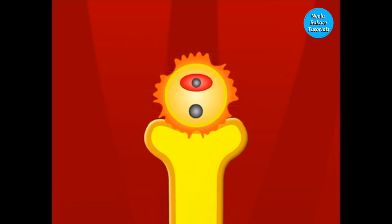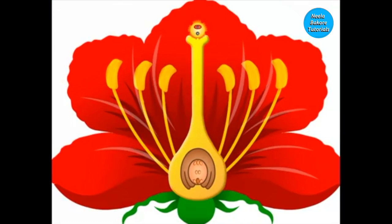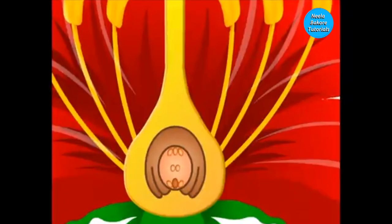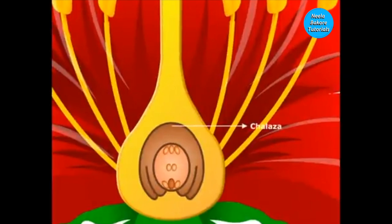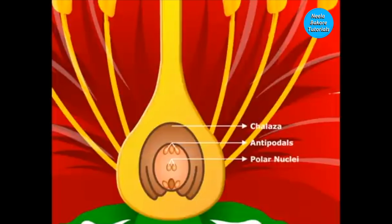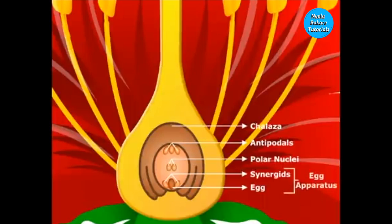The embryo sac has three cells towards the chalaza — these cells are known as antipodals. There are two nuclei in the middle called the polar nuclei. Three cells are towards the micropyle: the middle larger cell is known as the egg, and two smaller cells are called the synergids. The egg and the two synergids together form the egg apparatus.